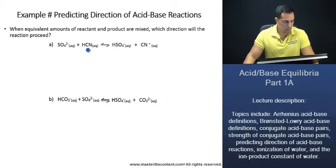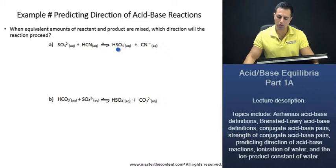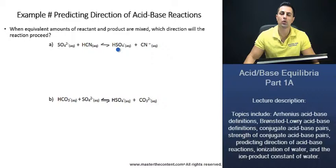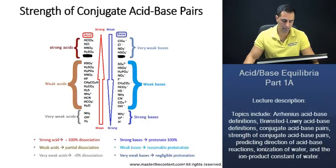Here we have hydrocyanic acid, HCN, right? And we also have hydrogen sulfate, HSO4-. What we can do is we have to identify now the stronger acid of the two. And how can we do that? Well, we can just go back to the chart that we had. We see here we have hydrogen sulfate up here, and then we have hydrocyanic acid down here.